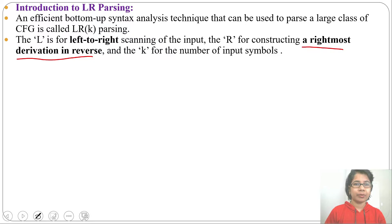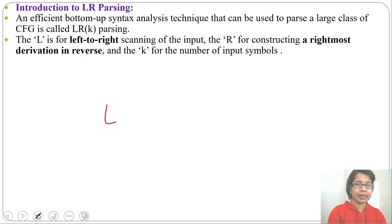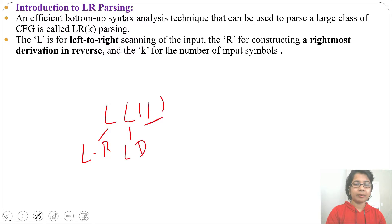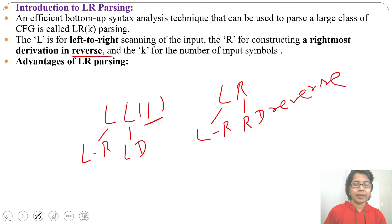If you are doing a rightmost derivation in top-down parsing and you reverse that, then that will be bottom-up parsing. In case of LL1 parsing, the first L was left-to-right scan, the second L was leftmost derivation, and 1 was the look-ahead symbol. In case of LR, the first L is for left-to-right scan and R is for rightmost derivation in reverse.